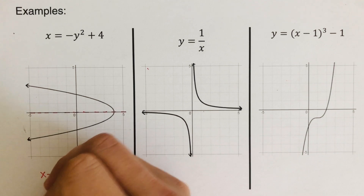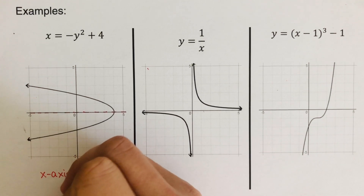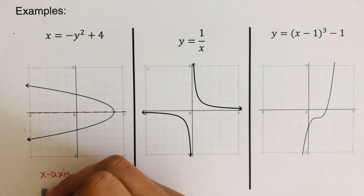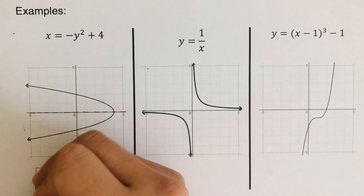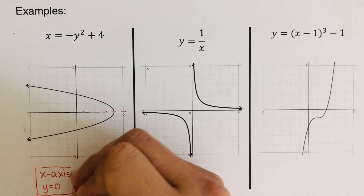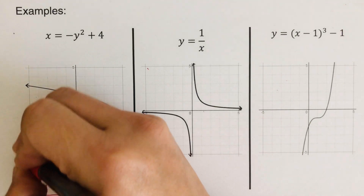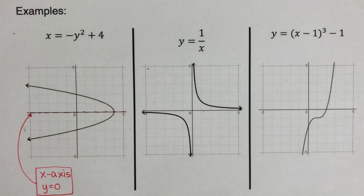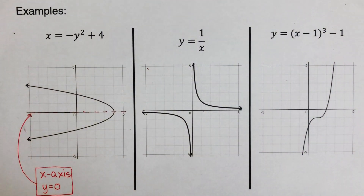So the equation for this: we can write that it's the x-axis, or if we want an actual equation for the line of symmetry, that is y is equal to zero. So that is the equation or description for this line of symmetry.